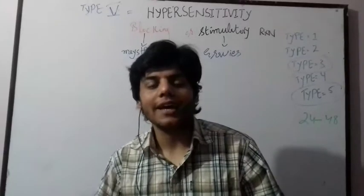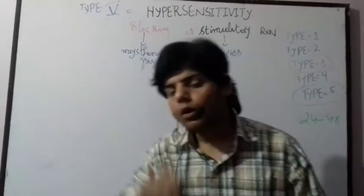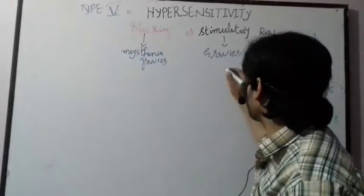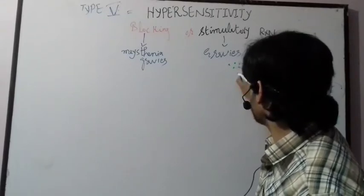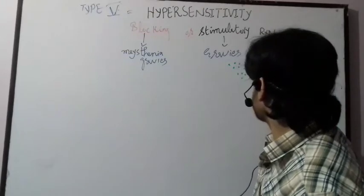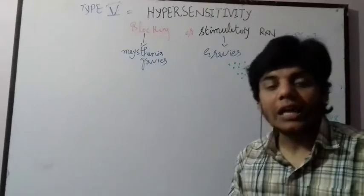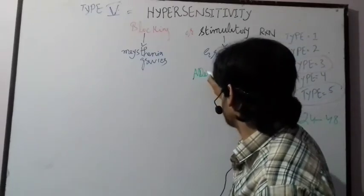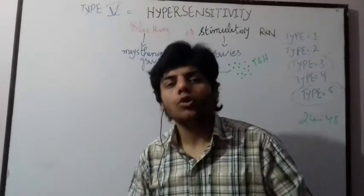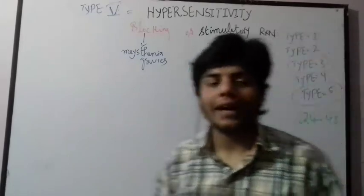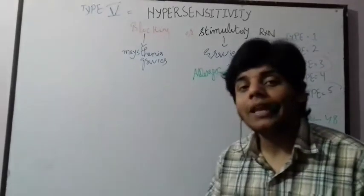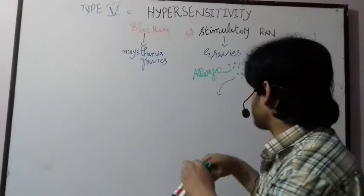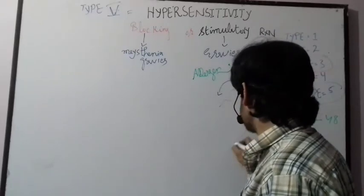Let me explain each disease activated in Type 5 hypersensitivity. In Graves' disease, we have thyroid-stimulating hormone (TSH). These TSH molecules act as the allergen — because in hypersensitivity we always talk about an allergen. Here the thyroid-stimulating hormone acts as an allergen, and it then activates thyroid cells.